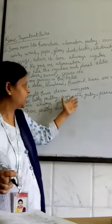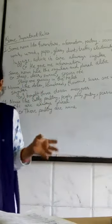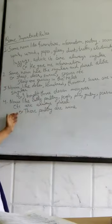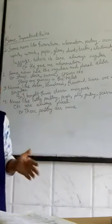Number four: nouns like cattle, poultry, people, police, gentry are always plural. These nouns are used only in plural sense.